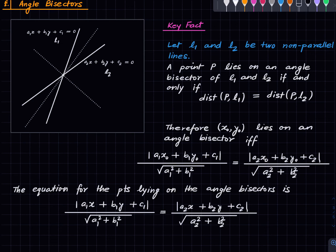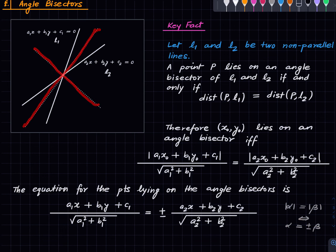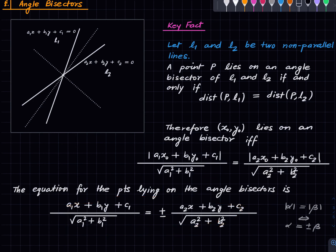Since absolute values are involved we can remove them by introducing a plus-or-minus sign. The key algebraic fact is: |α| = |β| is the same as α = ±β, meaning α equals either +β or −β. So the points lying on either of the two angle bisectors are precisely the points satisfying two linear equations — one with the plus sign and one with the minus sign. Taking the plus sign gives one of the bisectors and taking the minus sign gives the other.